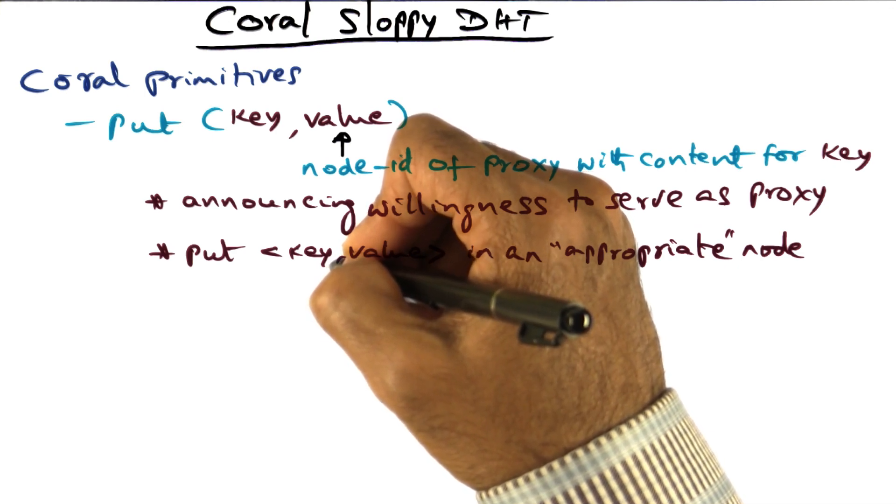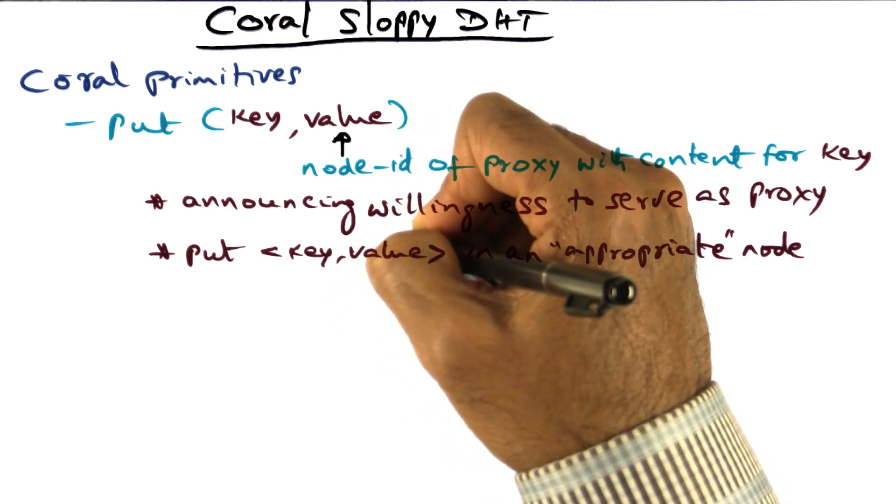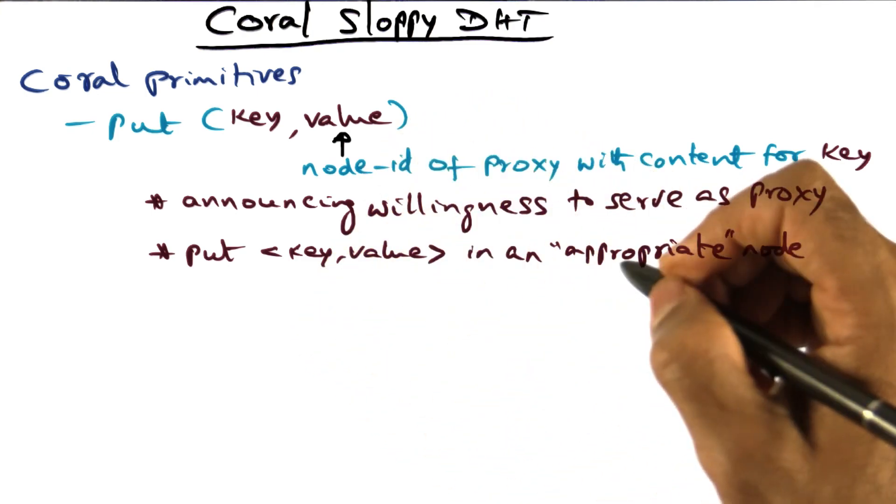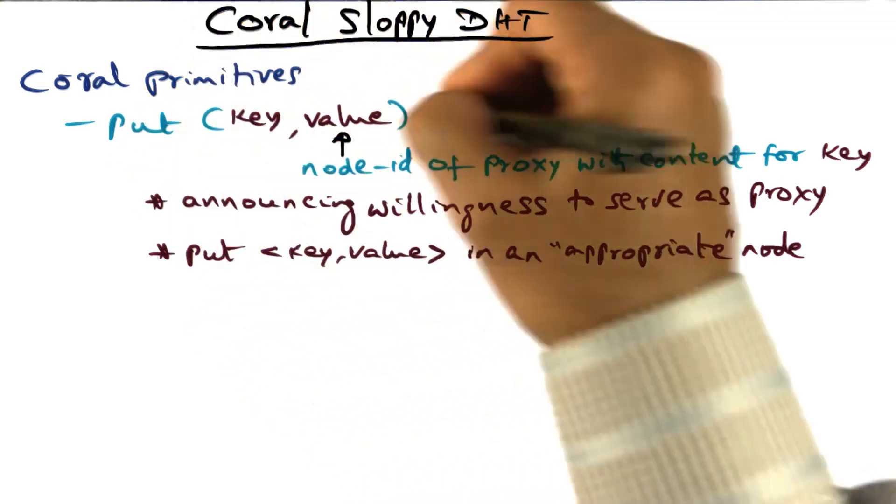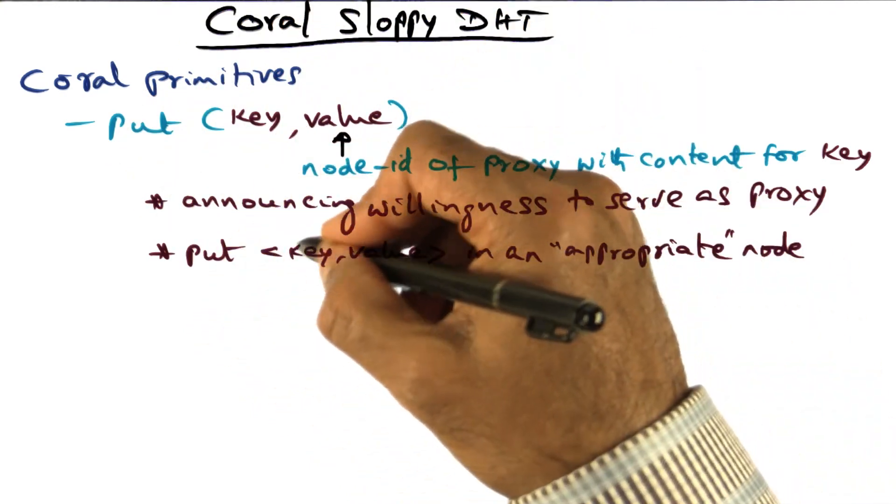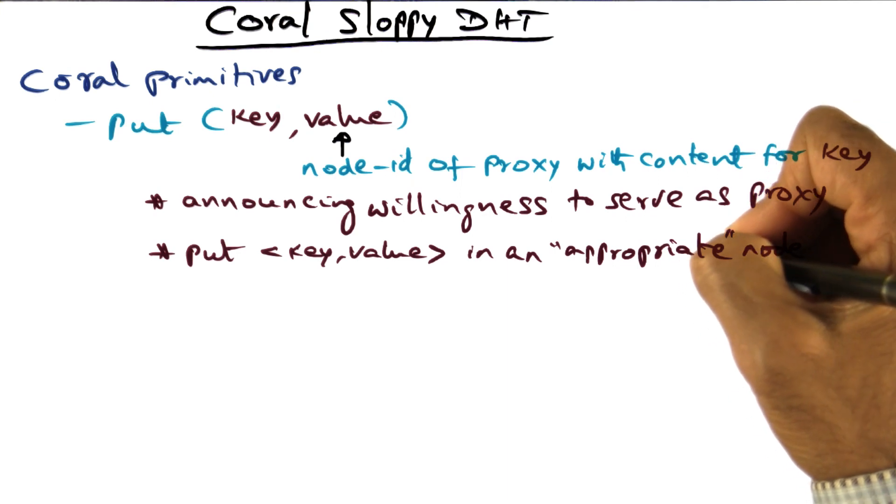In that case, that metadata server can return the value associated with that key. So what we need to do when we do a put operation is to place this key-value in an appropriate node.